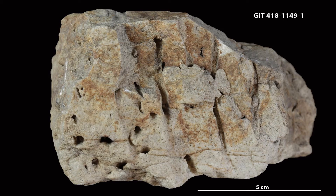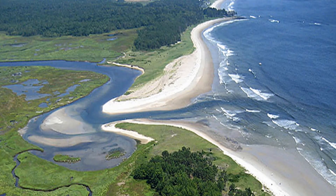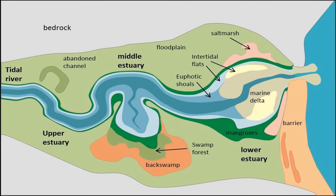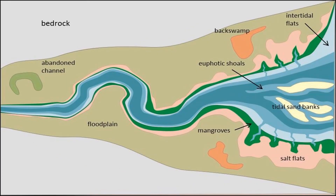The ichnofacies found in estuaries are mostly burrows such as Skolithos, cylindrical vertical burrows that can be made by many different species. There are two main types of estuaries: wave-dominated and tide-dominated. Wave-dominated estuaries have narrow entrances to restrict marine flushing, high river flow which can cause flooding, and naturally low turbidity. Tide-dominated estuaries have large entrances that allow marine flushing, river flow is high but does not flood often, and have naturally high turbidity.